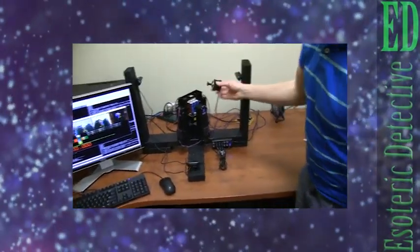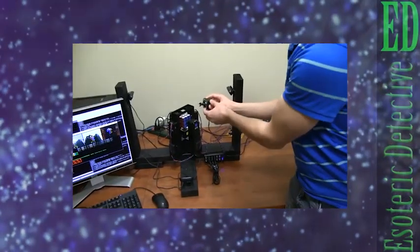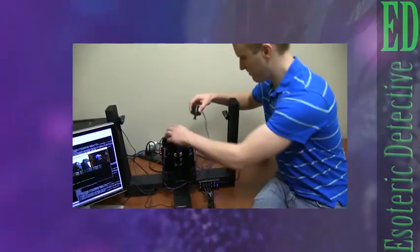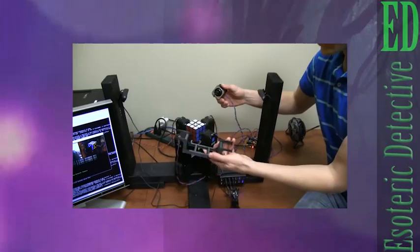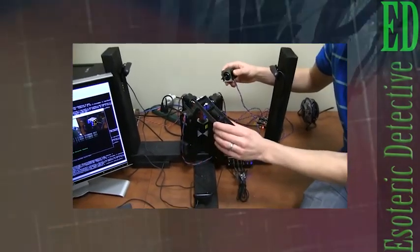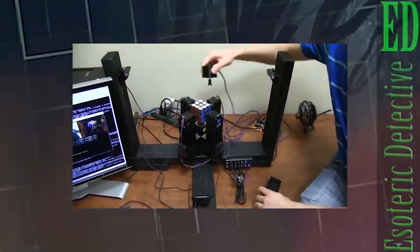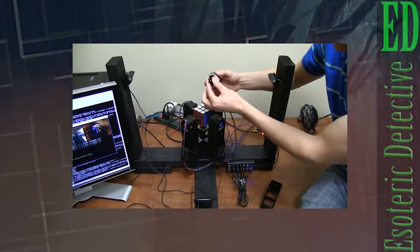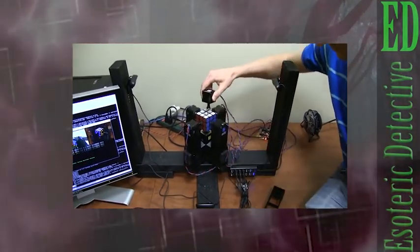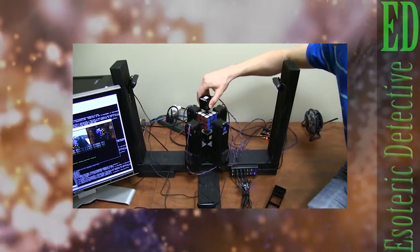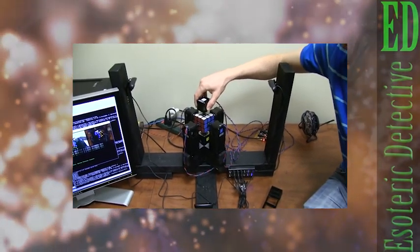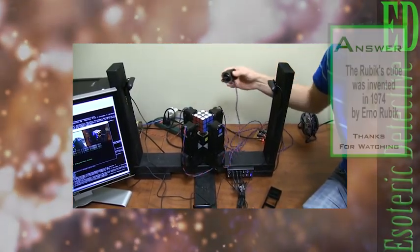We're turning the cube with stepper motors. They are resting in a 3D printed frame. The stepper motors have little 3D printed feet on the ends of them that fit into carefully drilled holes in each side of the Rubik's Cube.